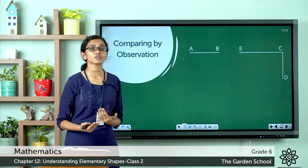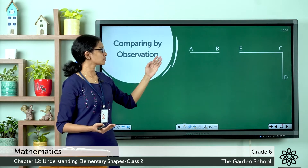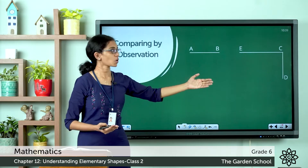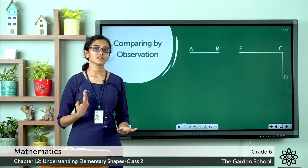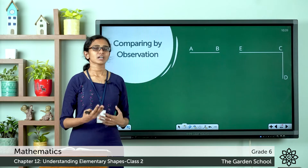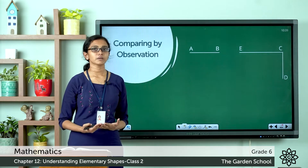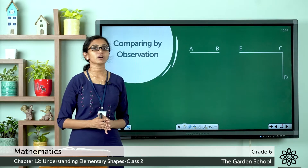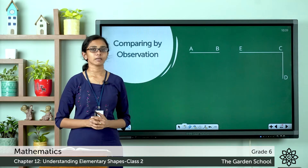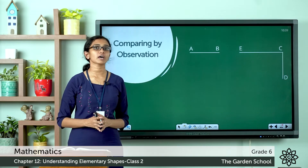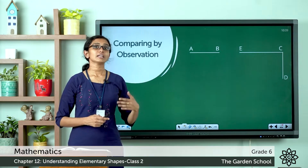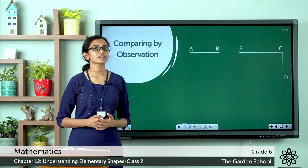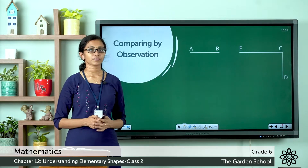But can we say for sure if line segment AB is longer or shorter than line segment CD? As you can see, comparing line segments just by observation is not a reliable method — it cannot be applied in all cases. So let's see other methods of comparing line segments.